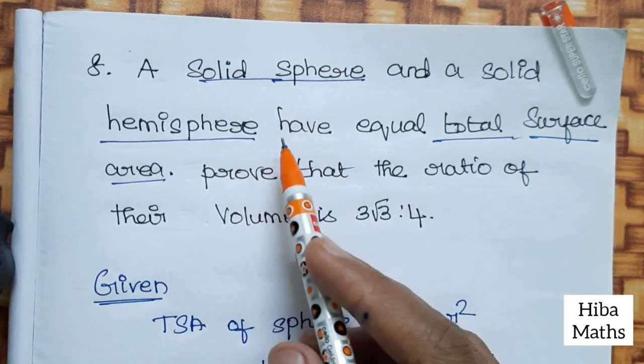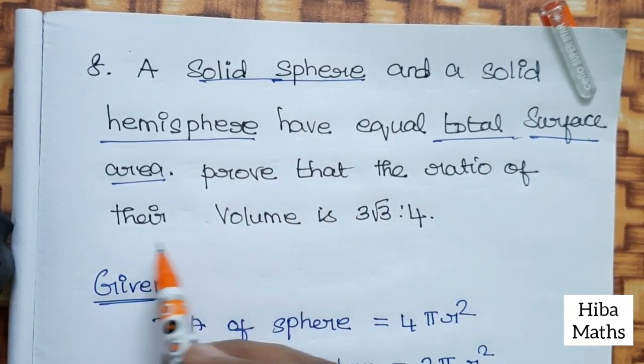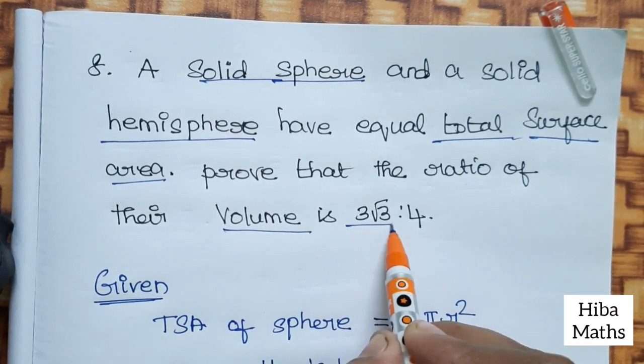So this is given. Prove that the ratio of their volume is 3√3 is to 4.